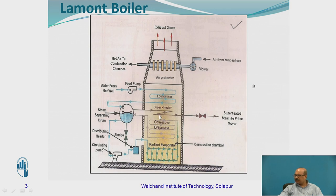Then this water comes to the convective evaporator. The temperature will be higher here in this particular portion, and then it comes to the convective evaporator. Once it increases the temperature again, it then passes through the separating drum.